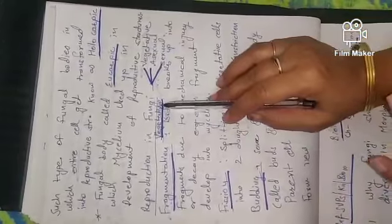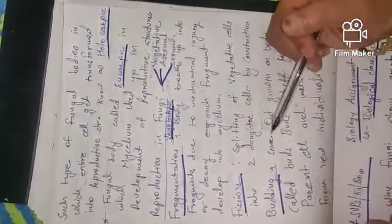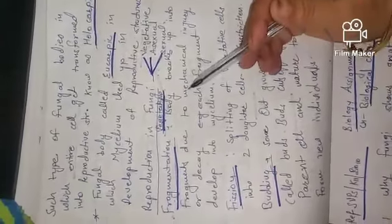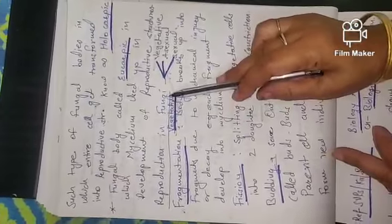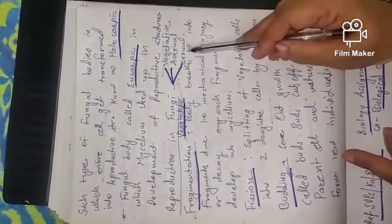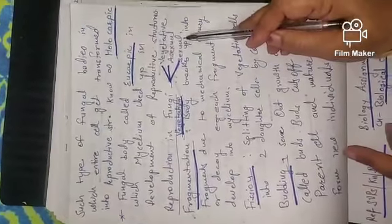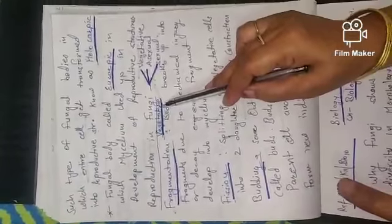What are the types of reproduction in fungus? Reproduction in fungus includes vegetative, asexual, and sexual reproduction. So first we start with the vegetative reproduction.